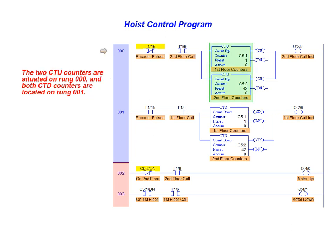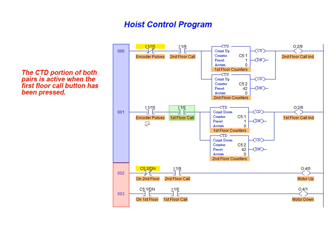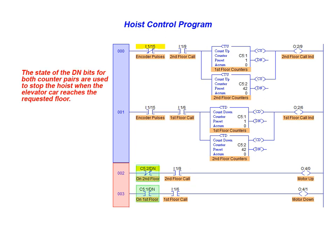The two up counters are situated on rung 0 and both down counters are located on rung 1. Pulses from the shaft encoder can only impact the up counters when a call to the second floor has occurred. Similarly, the CTD portion of both pairs is active only when the first floor call button has been pressed. The output control section also uses these two call button inputs to control the hoist direction. The state of the done bits for both counter pairs are used to stop the hoist when the elevator car reaches the requested floor.